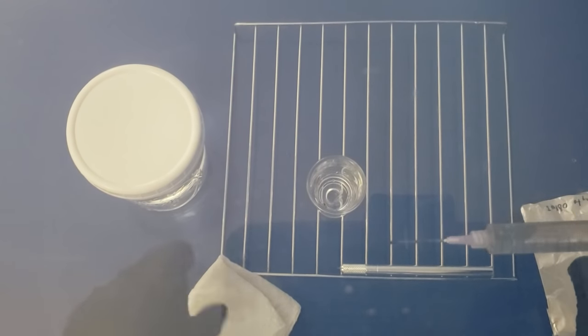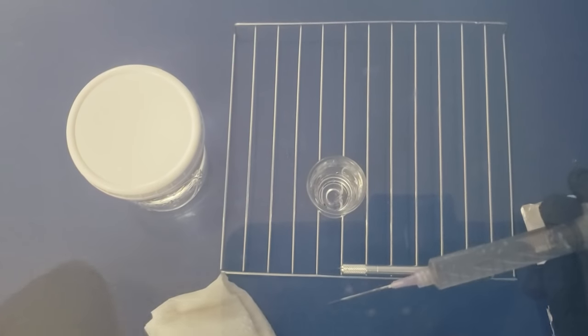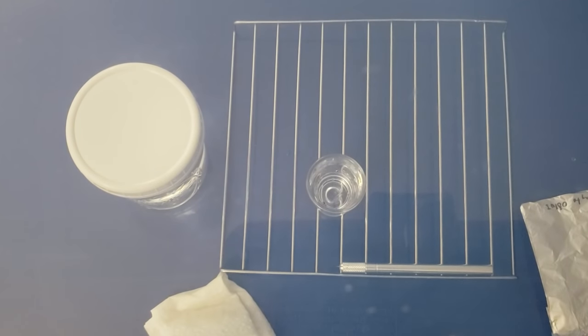Once that's done, I'll go ahead and wipe the needle tip here with isopropyl alcohol. Keep it sterilized and we'll put the cap back on the syringe. And there you have it, that's how you make a spore syringe.